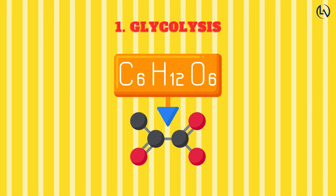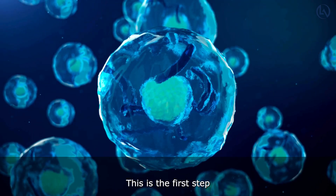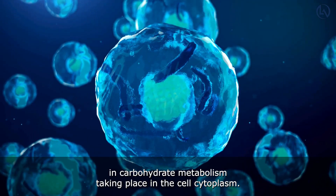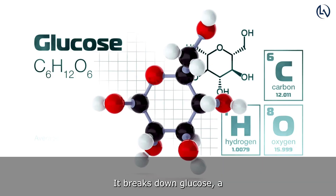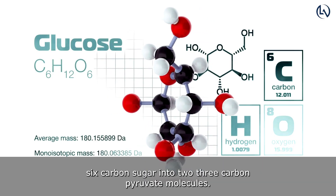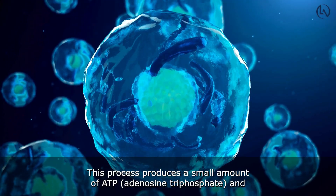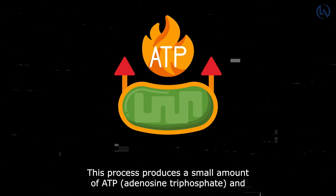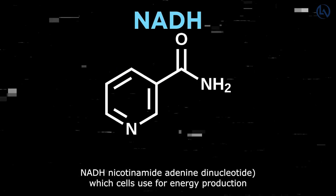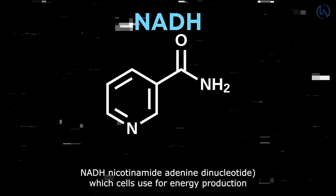Glycolysis is the first step in carbohydrate metabolism, taking place in the cell's cytoplasm. It breaks down glucose, a 6-carbon sugar, into two 3-carbon pyruvate molecules. This process produces a small amount of ATP and NADH (nicotinamide adenine dinucleotide), which cells use for energy production.